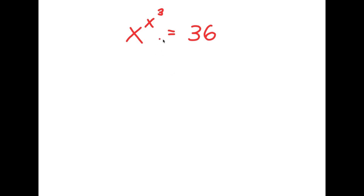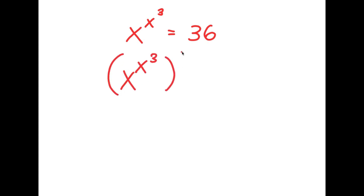So in this problem, I have x to the power of x to the power of 3 is equal to 36. To solve this problem, I'm going to first start by taking the power of 3 on both sides. So now I have x to the power of x to the power of 3, to the power of 3, is equal to 36 to the power of 3.